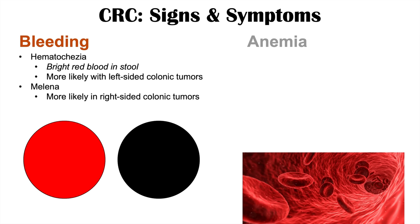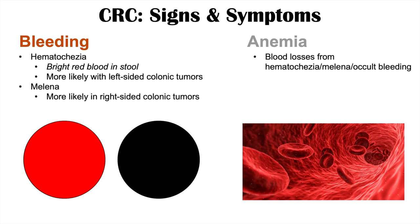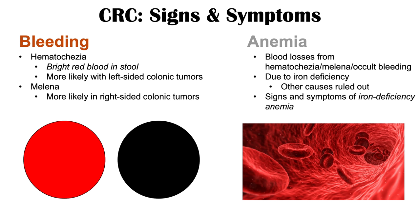With the bleeding comes anemia. Because of blood losses from hematochezia, melena, and occult bleeding — which is hidden bleeding the patient may not know about — iron is also lost. Eventually that iron is not replaced sufficiently, leading to iron deficiency anemia. If you see iron deficiency anemia in an older patient, it's very important to look out for colon cancer. Signs and symptoms of iron deficiency anemia include fatigue, pallor, shortness of breath, and findings like pica.